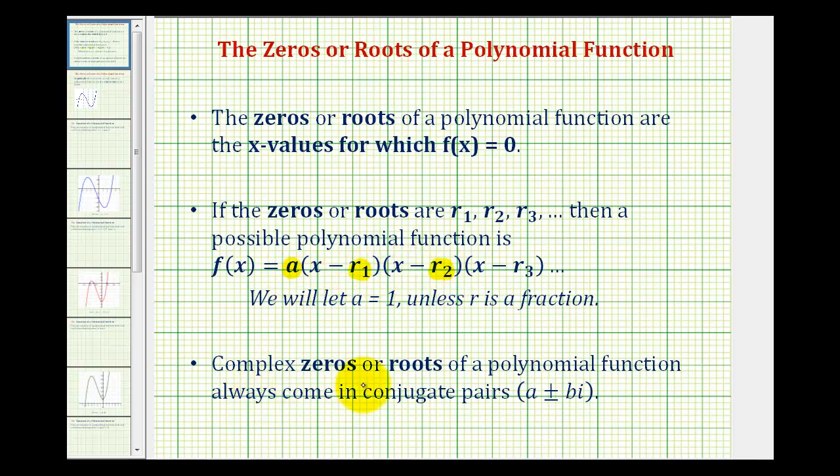And then again if we have complex zeros, these will always come in conjugate pairs. So if a plus bi is a zero, then so is a minus bi.